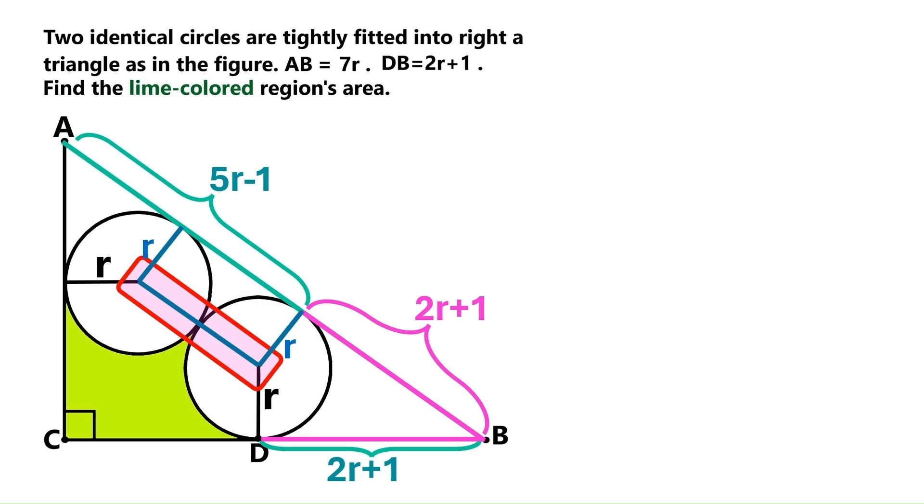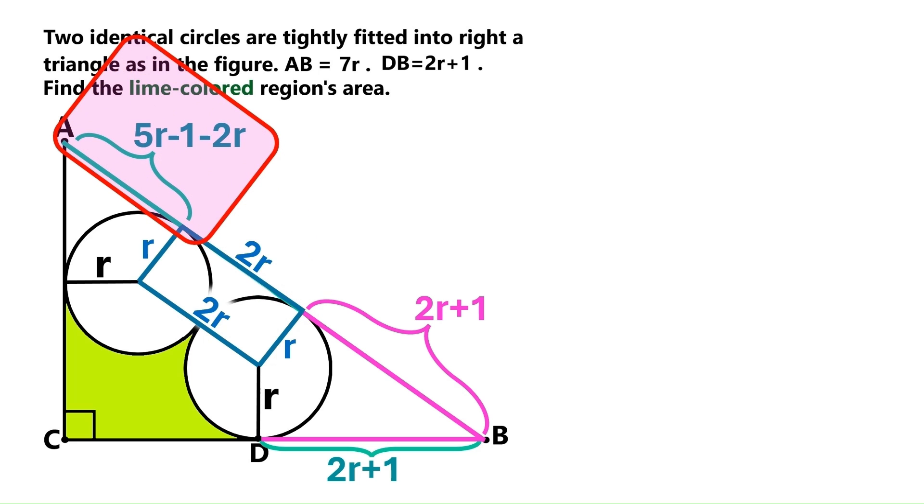Next, we join the centers of the twin circles like this, and this segment turns out to be 2r. We've got right angles here, and these sides are equal, so we can conclude that this shape is a rectangle, and these two sides are equal too, so this side is also 2r, and this segment over here is 5r minus 1 minus 2r, which equals 3r minus 1.